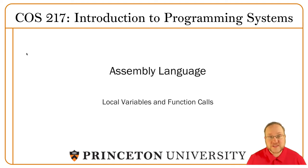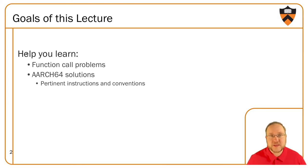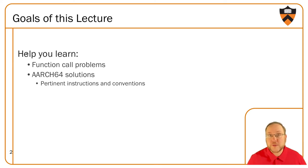Welcome back to COST 217 Lecture. This is the third lecture of the assembly language part of the course, where we really dig in and see what we've been missing to be able to translate typical programs from a high-level language like C into assembly language. Our programs thus far have been quite artificial. We'll be talking about the challenges of functions and the approach that ARM takes to overcome these challenges to support this fundamental programming primitive.